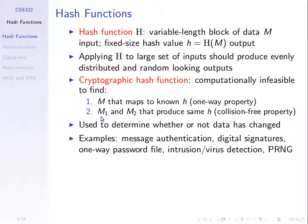Another property is that the hash of two different messages, m1 and m2, should produce different hash values. Or the other way: it's practically impossible for someone to find two different messages that produce the same hash value. So from a security perspective, it should be hard to find the original message given only the hash, and it should be hard to find two different messages that produce the same hash. That will be important when we use hash functions for authentication.